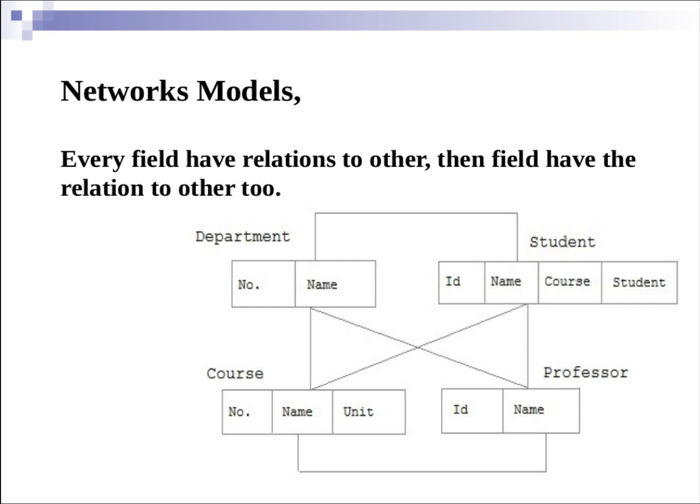The network model's original inventor was Charles Bachmann, and it was developed into a standard specification published in 1969 by the Conference on Data Systems Languages Consortium. Every field has relations to other fields. On the display, department table has a relation to student table, course table, and lecturer table.